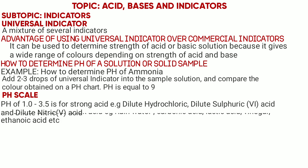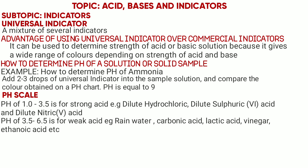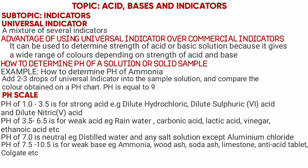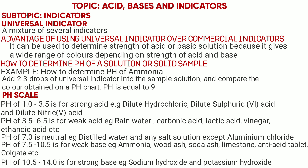pH 3.5 to 6.5 is weak acids, which include rainwater, carbonic acid, lactic acid, vinegar, and ethanoic acid. pH 7.0 is neutral, which includes distilled water and salt solution. pH 7.5 to 10.5 is weak base, which includes ammonia, soda ash, wood ash, limestone, antacid tablets, and toothpaste. pH 10.5 to 14.0 is strong base, which includes sodium hydroxide and ammonia.